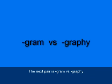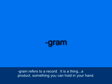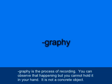The next pair is GRAM versus GRAPHY. GRAM refers to a record — it is a thing, a product, something you can hold in your hand. GRAPHY is the process of recording. You can observe that happening, but you can't hold it in your hand. It's not a concrete object.